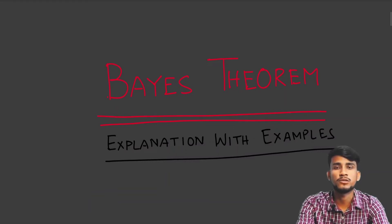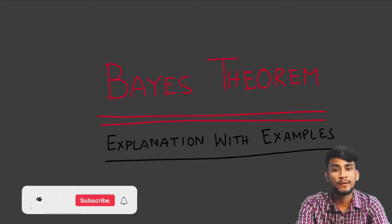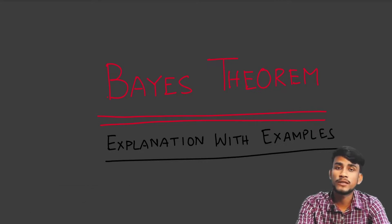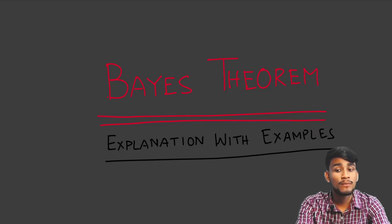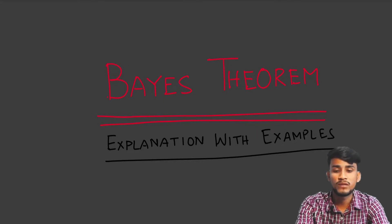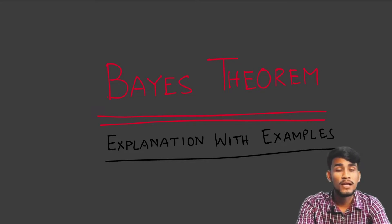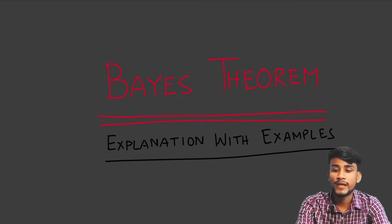Hello everyone, welcome to Math with Smart Tips. Today in this video we are discussing Bayes' theorem and its applications with some examples. Bayes' theorem is the most powerful theorem of probability theory. Bayes' rule is a conditional probability that measures the uncertainty given a specific circumstance. It is used in everyday life, including friendships and dating. Applying Bayes' theorem will help you analyze what you gain and what you lose by taking certain actions.